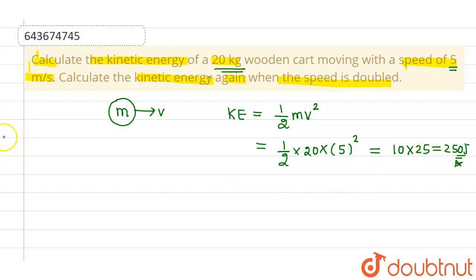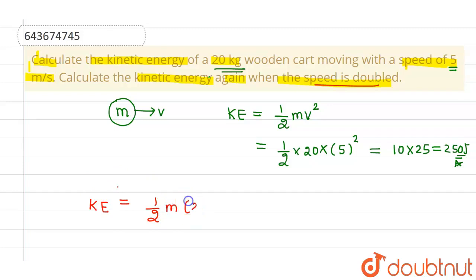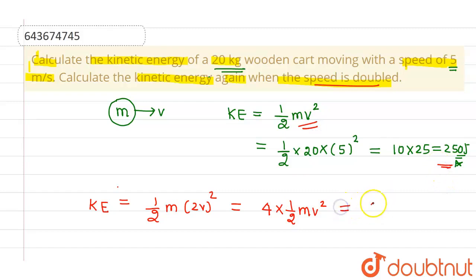Now we find the kinetic energy when the speed is doubled. This will be half m into (2v) squared, which comes out to be 4 times of half mv squared. Since we already know that half mv squared is 250 joules, therefore 4 times of half mv squared will be 4 into 250 joules, which equals 1000 joules.